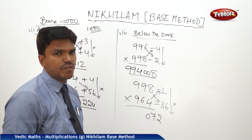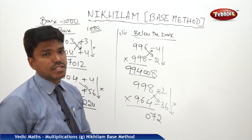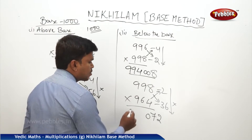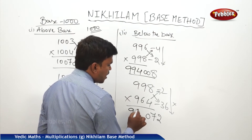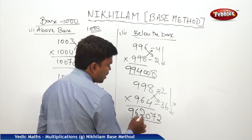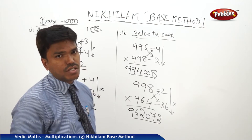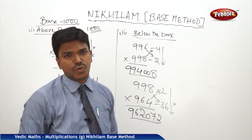So, 998 minus 36 is 962. My answer is 962, 072.